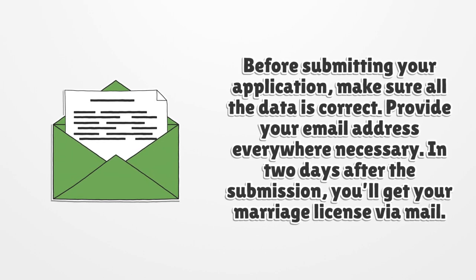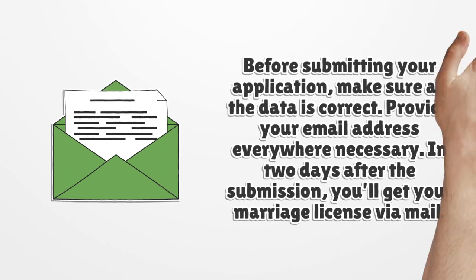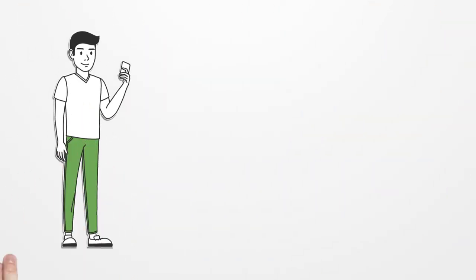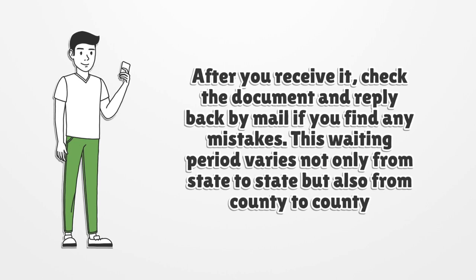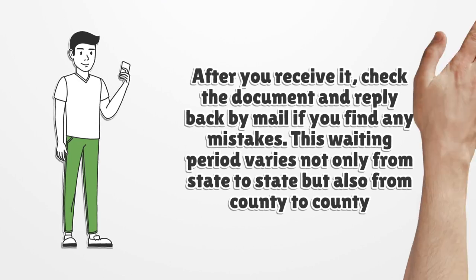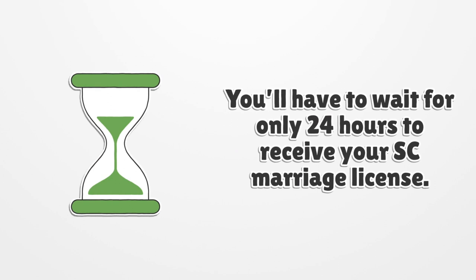In two days after the submission, you'll get your marriage license via mail. After you receive it, check the document and reply back by mail if you find any mistakes. This waiting period varies not only from state to state but also from county to county. You'll have to wait for only 24 hours to receive your SC marriage license.